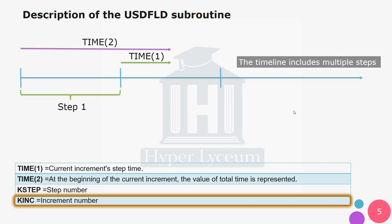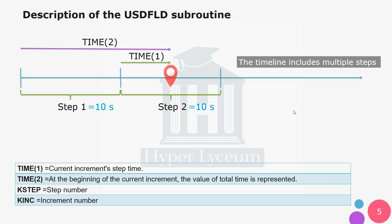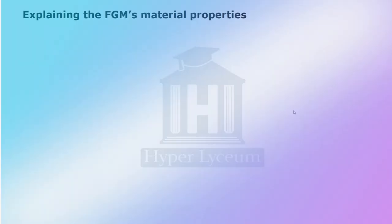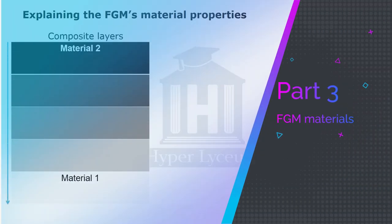KSTEP is the number of each step and KINC is the number of each increment. For example, suppose step 1 and step 2 both take 10 seconds; if a material point is at 5 seconds into step 2, then TIME(1) would be 5 seconds while TIME(2) would be 15 seconds.